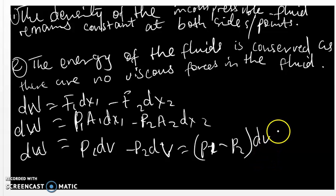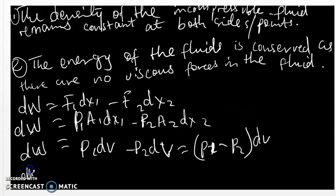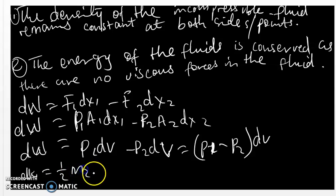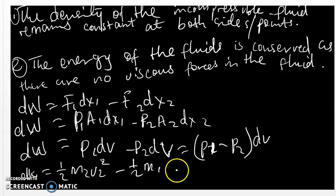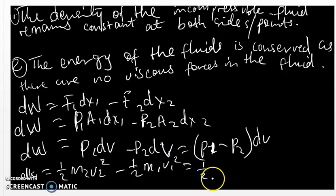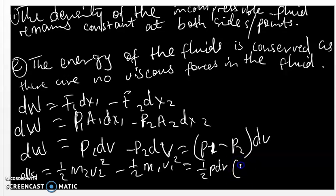Therefore, the change in kinetic energy of the fluid will be given by delta K, where delta K equals one-half M2 v2 squared minus one-half M1 v1 squared. Factoring this out, we get one-half rho dV times (v2 squared minus v1 squared). This gives us the change in kinetic energy of the fluid.